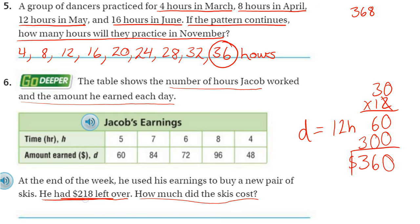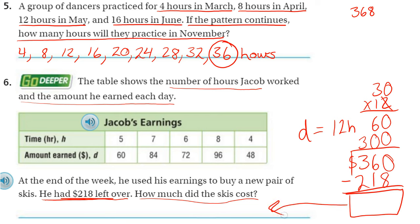He bought skis and had $218 left over. So if he has $218 left over, we can subtract that and that will show us the amount of the skis. I could have added up all of his dollar amounts, but then I would have been adding really big numbers. Instead, I just made this an equation, added the smaller numbers, plugged it into the equation, and solved. But either way would get you the correct answer.